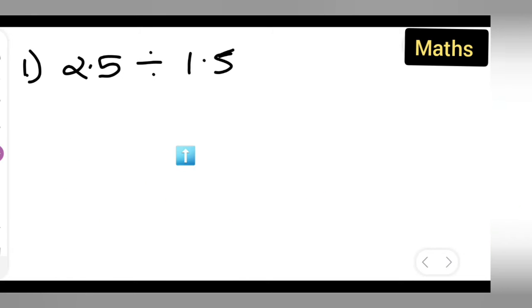First, you can write down the question: divide 2.5 by 1.5. What you're going to do is first remove the decimal point. That is 25 over 10 divided by 15 over 10. Remove the decimal point and write it in this form.